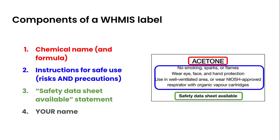So let's take a look at the components of a WHMIS label. The first thing you need is a chemical name, and preferably a chemical formula as well, although technically it's not required. On this WHMIS label here in red, we have acetone written at the top. The second component is instructions for safe use — a combination of both the risks and the precautions you can take. With acetone, those are labeled in blue, picking the most important precautions and risks. The third component is a statement that says the safety data sheet is available, shown in green at the bottom of the label.